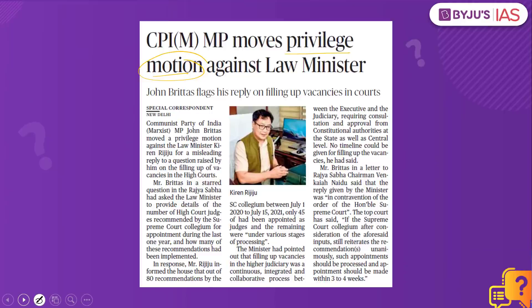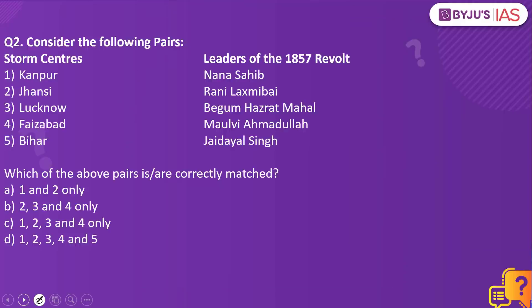Now let's look into the next practice question. Consider the following pairs — we have the locations on one side and the leaders of the 1857 revolt on the other side. We have to match the places with the leaders who took up the leadership role in the 1857 revolt.